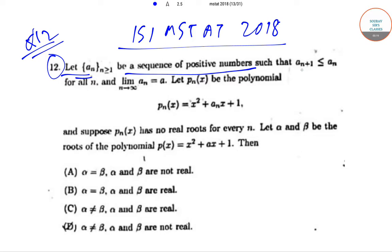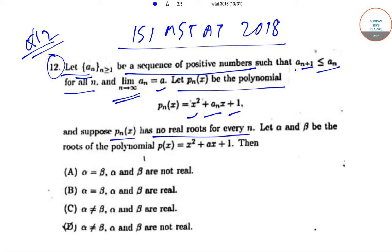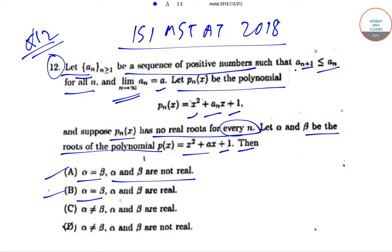In question number 12, it is given that let a_n be a sequence of positive numbers such that a_{n+1} is less than or equal to a_n for all n, and the limit of a_n as n tends to infinity is equal to a. We have the polynomial p_n(x) = x² + a_n·x + 1, and p_n(x) has no real roots for every n. Let alpha and beta be the roots of the polynomial p(x) = x² + a·x + 1. The options are: A) alpha = beta and both are not real; B) alpha = beta and both are real; C) alpha ≠ beta and both are real; D) alpha ≠ beta and both are not real.